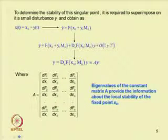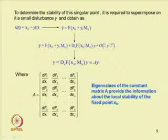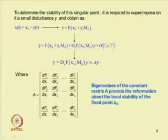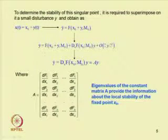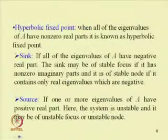By perturbing the governing equation, we obtain the Jacobian matrix, and by finding the eigenvalues of the Jacobian matrix, we can determine whether the equilibrium point is stable or not. If the real part of the eigenvalue is negative, then the fixed point response is stable. If the real part of the eigenvalue is positive, then the system is unstable.